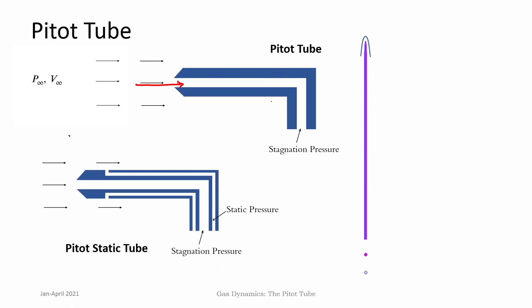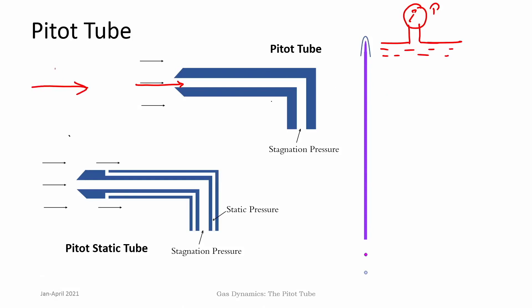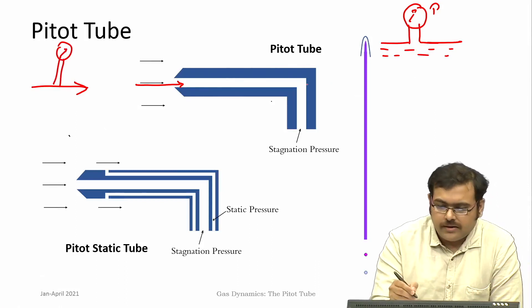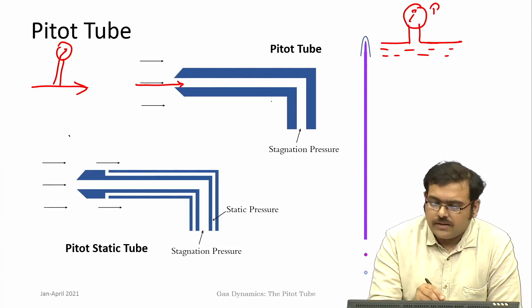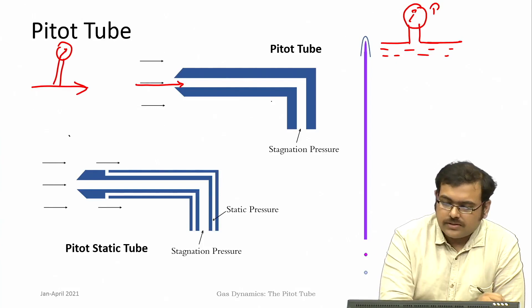The pitot tube is always kept normal to the flow direction. If you are measuring static pressure, it is always measured parallel to the flow, while a pitot tube measures stagnation pressure normal to the flow. When the flow stagnates within the tube, you measure the stagnation pressure. So effectively, pitot tubes measure stagnation pressure.